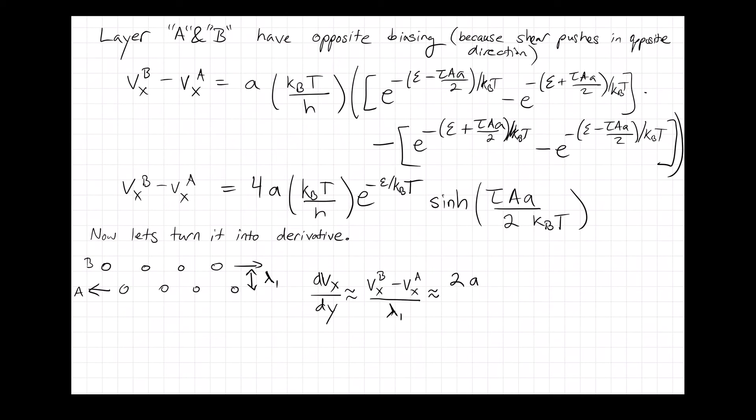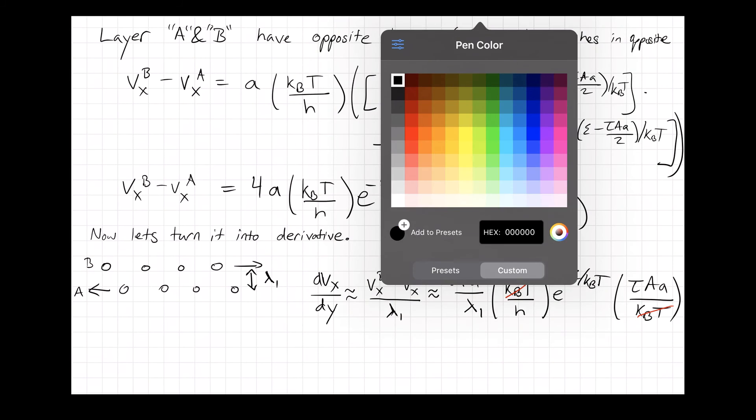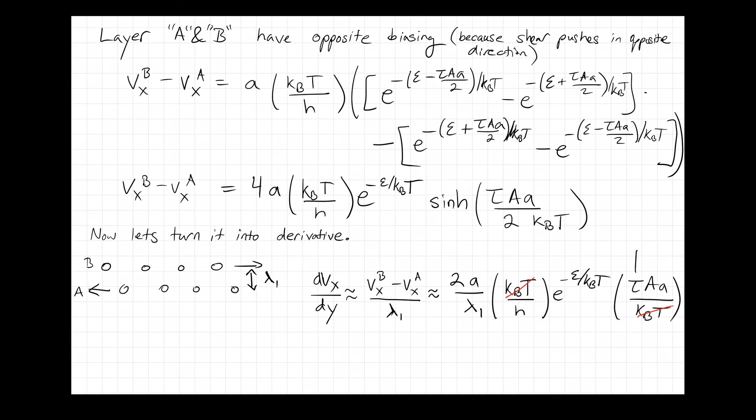But because we're taking a small distance, the sinh can actually, we'll just take the linear approximation of that, and then the tau A stuff all comes out as a linear component. You'll see that the k_b T's cancel, and good things happen.